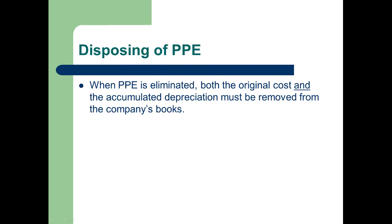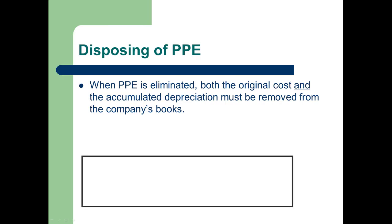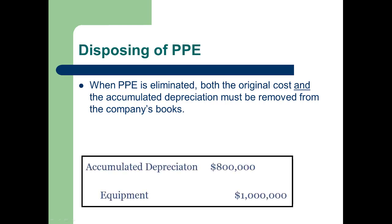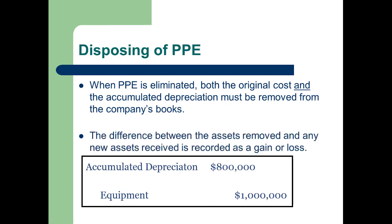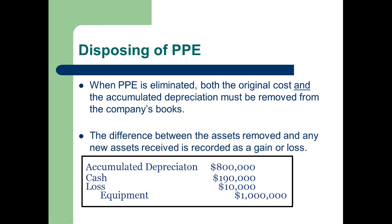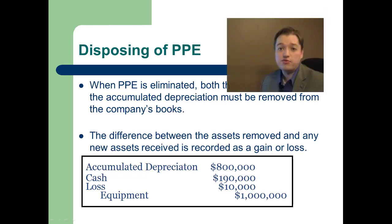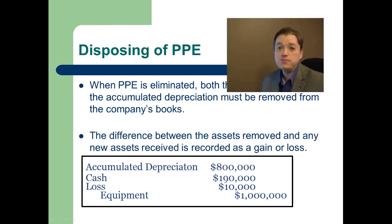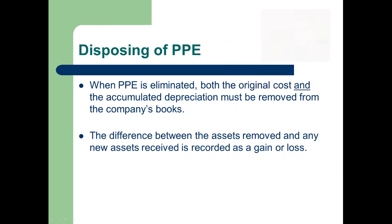So in our journal entry to show that we've gotten rid of this asset, we're going to credit away the asset value. We're going to debit away the accumulated depreciation. Then the difference between what we're getting rid of and what we might get — whether it's cash or another piece of equipment if we're doing a swap or an exchange — any difference becomes a gain or a loss on disposal. And that's really it. It's pretty straightforward to record disposals, especially if we're just talking about selling it off or just junking it.